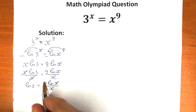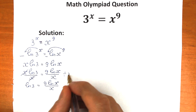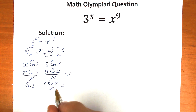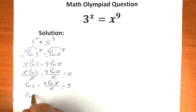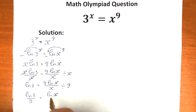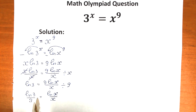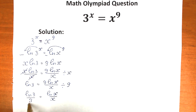Now let's divide both sides by 9, because we still have this constant on the right hand side. So we divide both sides by 9 and as a result we have natural log 3 over 9 equal to natural log x over x. Let's swap positions so the x expression is on the left: natural log x over x equals natural log 3 over 9.